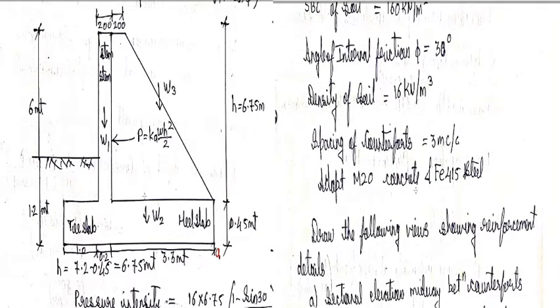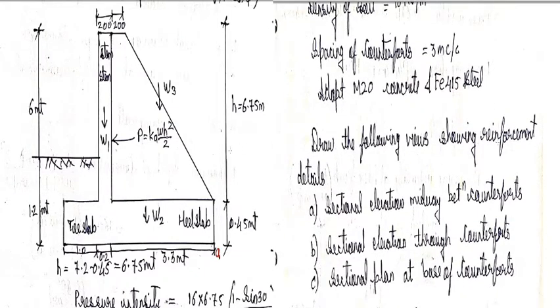Adopt M20 concrete and Fe415 steel. Draw the following views showing reinforcement details: sectional elevation midway between the counterforts, section elevation through the counterforts and sectional plan at the base of the counterfort.